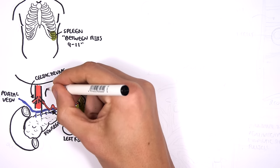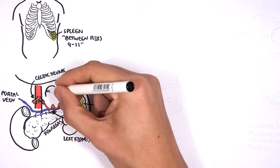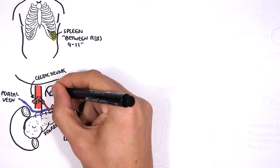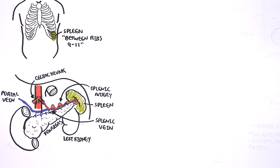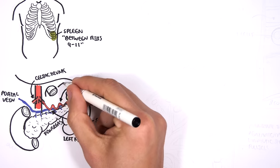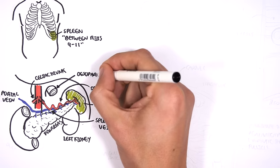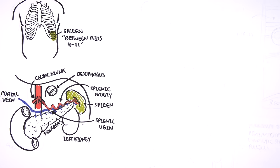The esophagus comes off the diaphragm at the level of T10, meaning at the level of the tenth vertebra, and then joins to the stomach. The stomach then joins with the duodenum, which is the first part of the small intestine, and it's important to know that the stomach is in close proximity with the spleen.